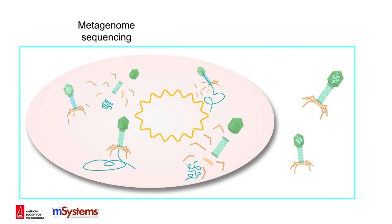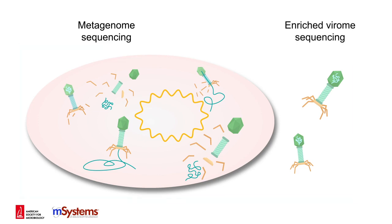Metagenome sequencing can capture the genomes from host-associated and free phages, whereas enriched virome sequencing enables detection of less abundant virions.